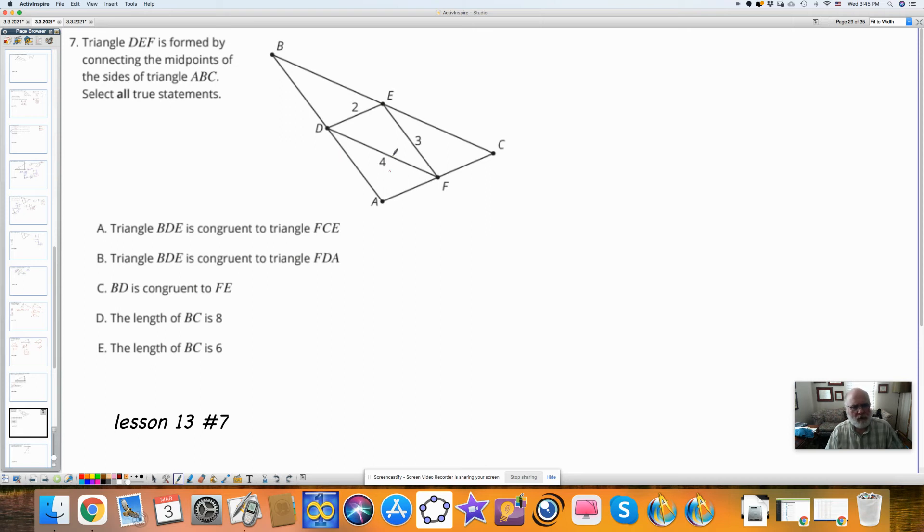Triangle DEF is formed by connecting the midpoints of the sides of the triangle. Select all statements that are true. Notice we have, if these are connecting midpoints, we have parallel lines here, here, and here. These two lines are parallel, and these two lines are parallel. Alternate interior angles are congruent with this. That's true. This is this line here.